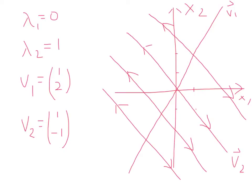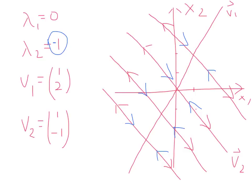Let's also consider a different scenario. If lambda 2 is now negative one instead of positive, what difference would that make? Well, v1 will still be the same, and every point on that line is still an equilibrium point. We draw v2 in the same direction, but because lambda 2 is negative, the arrows now point inward toward the origin. In the negative case, along all the parallel lines you have to reverse the direction of the arrows. The phase portrait looks the same, except all arrow directions are reversed.